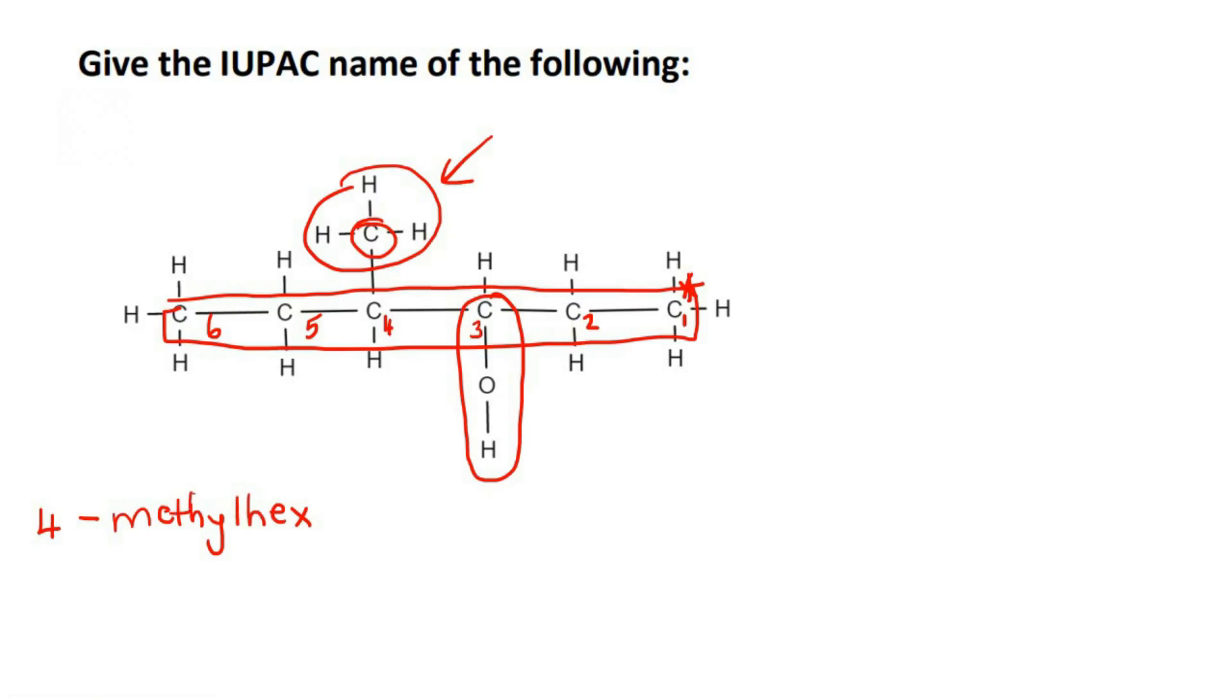And then the functional group. So the functional group is on carbon number three. So how do we do this? So some students, they get a bit confused with, should we put an AN over here or shouldn't we? And we actually should.